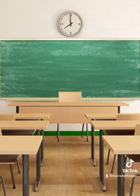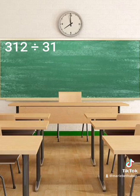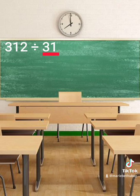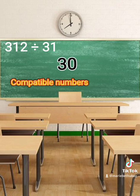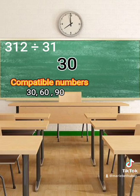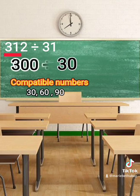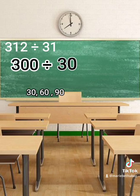Now, let's try to estimate with a two-digit divisor. For example, 312 divided by 31. In this division problem, first we will round the divisor to the greatest place value, then we will use compatible numbers for the dividend to easily estimate it. So, rounding 31 gives us 30. The compatible numbers for 30 are 30, 60, 90, and so on. Since 30 is the nearest compatible number, we keep 30 and add a 0 for the rest, giving us 300. Then we divide 300 by 30, which equals 10.